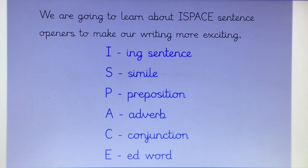And E is for an ED word. So your ED word comes at the beginning. So something like, astonished, she looked in the night sky and saw a UFO. So you've got your ED word there. It is again, it's our fronted adverbial, as are all of the rest. So you've got your comma after that ED word. And then you've got the rest of your sentence. It's just telling you more about what is happening and giving you that extra detail that makes it more exciting for people to read.